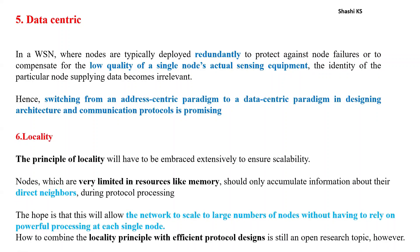The next mechanism is locality. The principle of locality must be employed in a WSN to ensure scalability. Since nodes have limited memory resources, it is sufficient to accumulate information only about direct neighbors during protocol processing. This allows the network to scale to a large number of nodes without relying on powerful processing at each single node. Locality must be combined with efficient protocol designs.